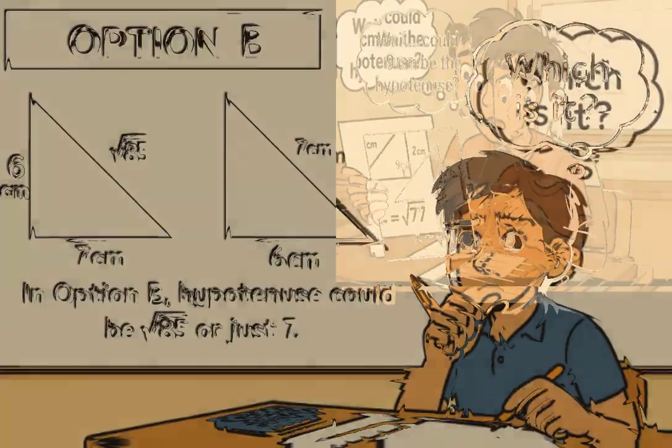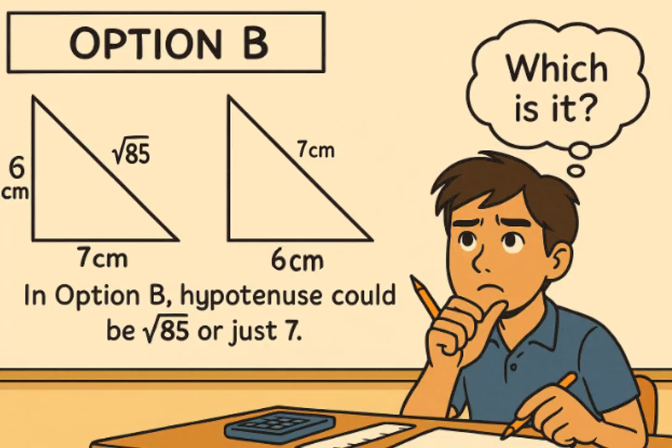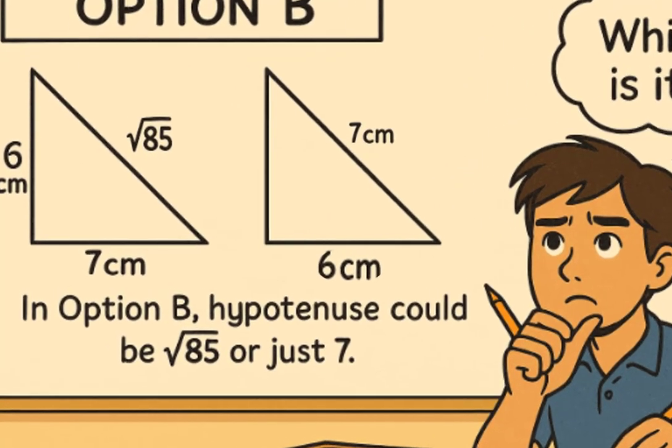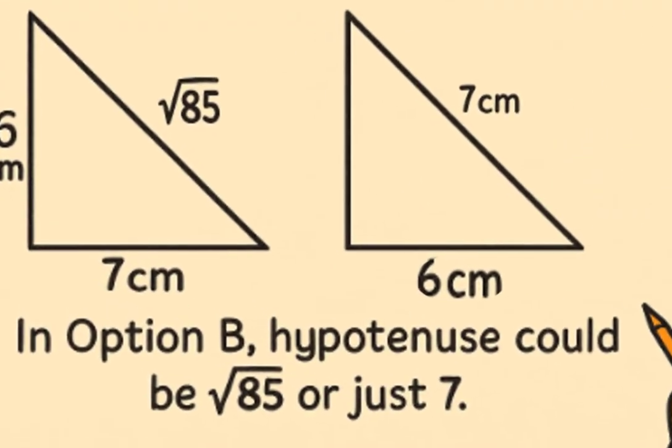Now for option B, the two sides are six and seven. Here, seven is the longer one, so it might be the hypotenuse. So again, depending on how we interpret it, the hypotenuse in option B is either square root of 85 or just seven.